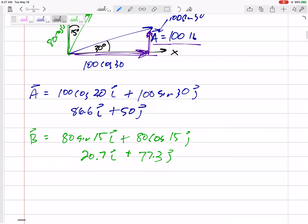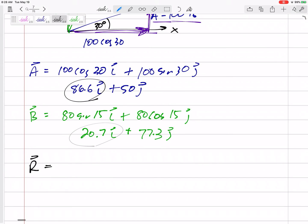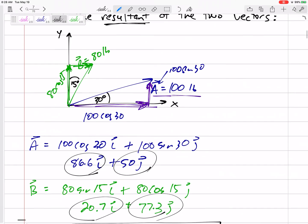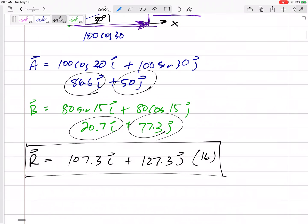All right, so let's add them together. We just take the i components add them together: 86.6 plus 20.7 would be 107.3 in the i. 50 plus 77.3 would be 127.3 in the j. The units are pounds. There we go, that is the resultant written in Cartesian notation.